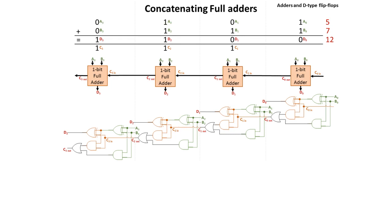We then have 1 and 1 coming in on A2 and B2, with the carry 1 coming in from before. 1, 1, and 1 is 1 carry the 1. The 1 is output here on D2 and the carry 1 comes into our final full adder. We then have 0 and 0 being input on A3 and B3, with the 1 coming in on the carry 3 line. 1 plus nothing is 1, and that simply gets output here.